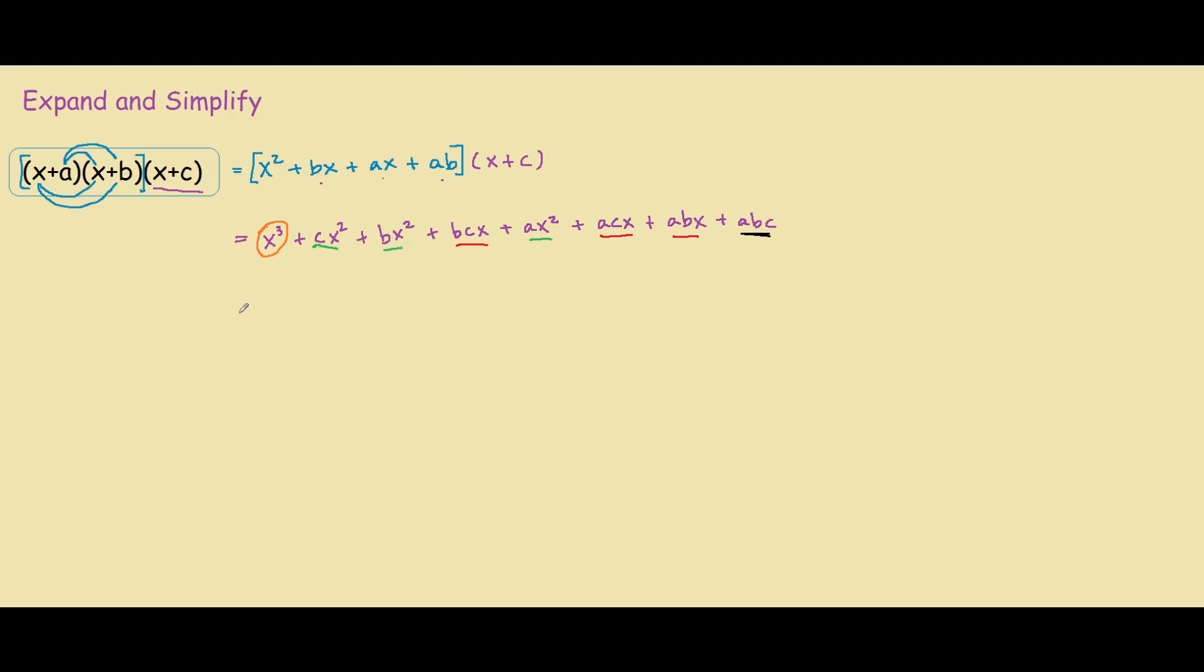So if we group up the like terms together, we have x cubed, and over here we have ax squared, plus bx squared, plus cx squared. So we can ignore these now.